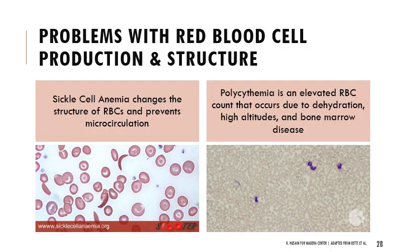There can be different problems with red blood cell structure that affect function. Sickle cell anemia, with sickle-shaped red blood cells, is dangerous because it stops microcirculation in capillaries. Polycythemia is another issue — due to dehydration, high altitudes, increased red blood cell production, or bone marrow disease — where you have a higher proportion of red blood cells relative to plasma, making blood very viscous and hard to move through vessels.